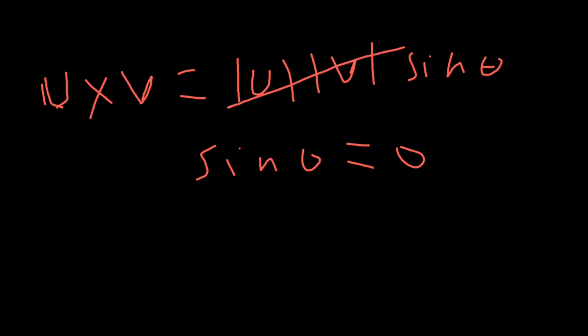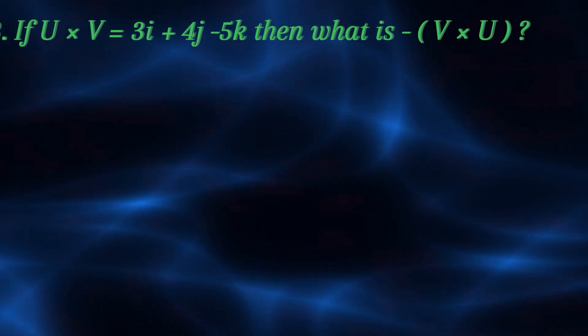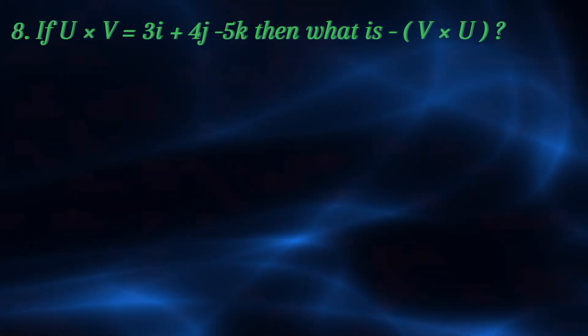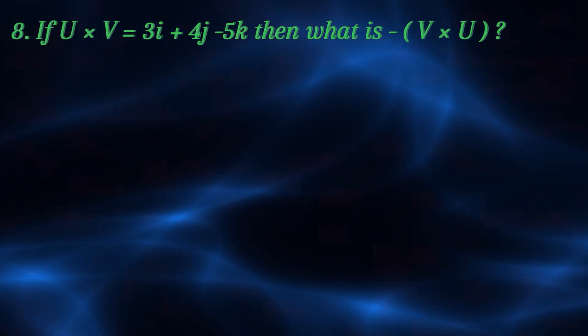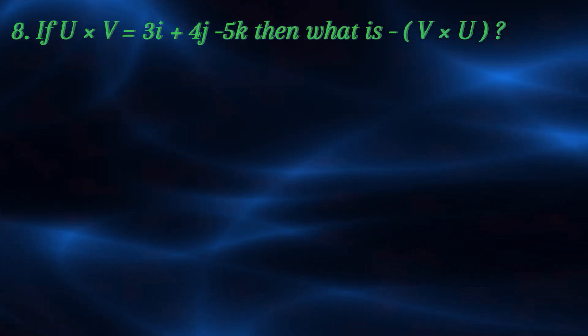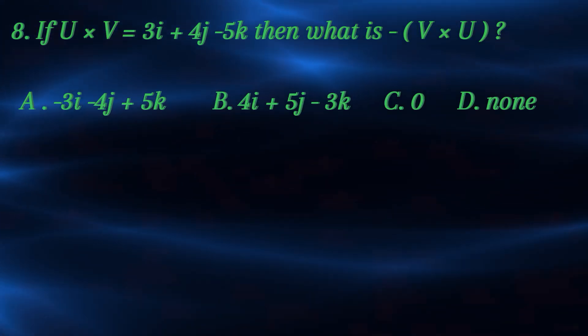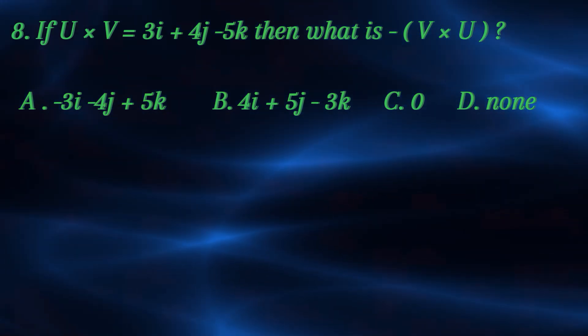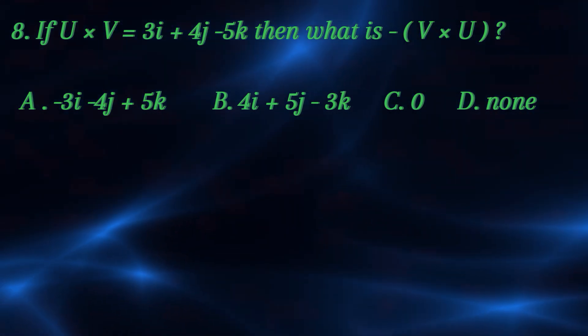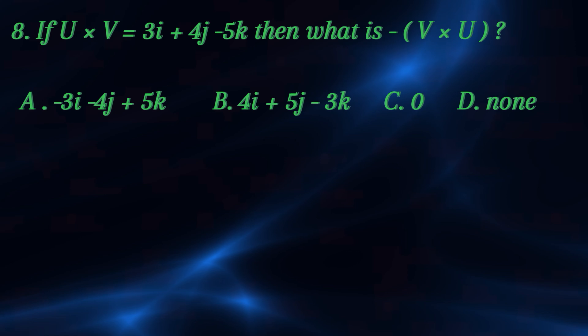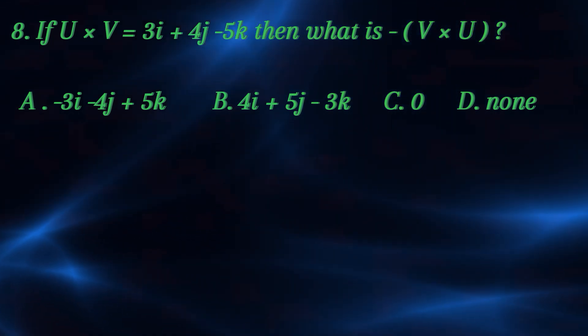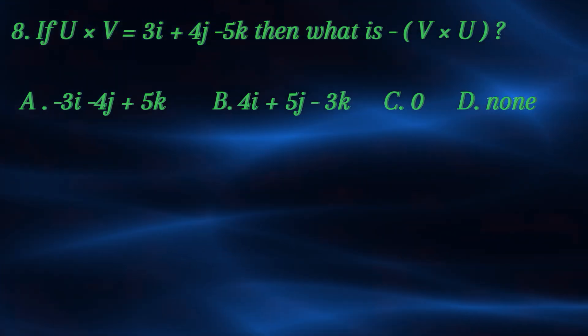If the angle is zero degrees, the cross product is zero. Now returning to the original problem: if u cross product of v is equal to 3i plus 4j minus 5k, what is the negative of v cross product of u? Answer choices: a) minus 3i minus 4j plus 5k, b) 4i plus 5j minus 3k, c) zero, d) nine.